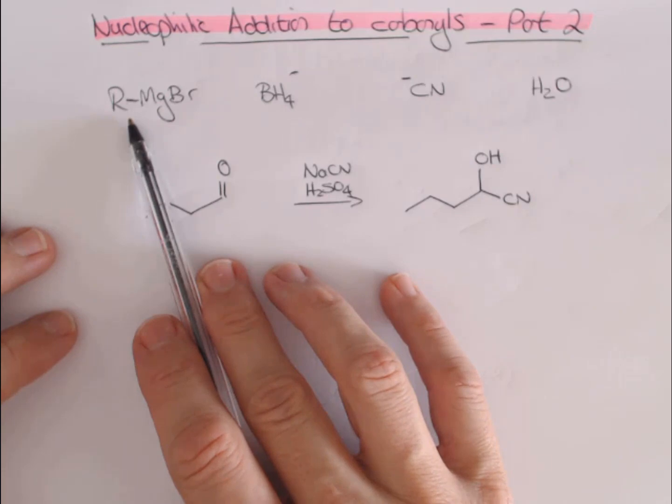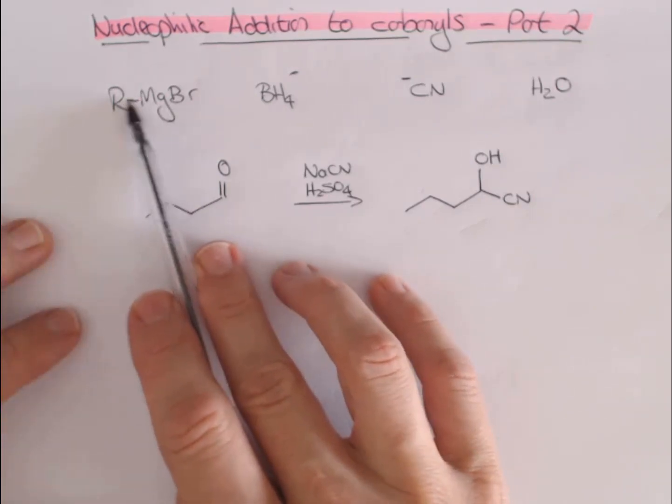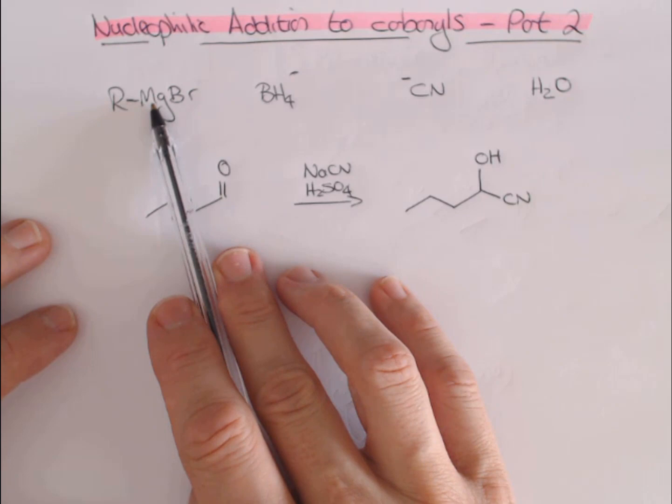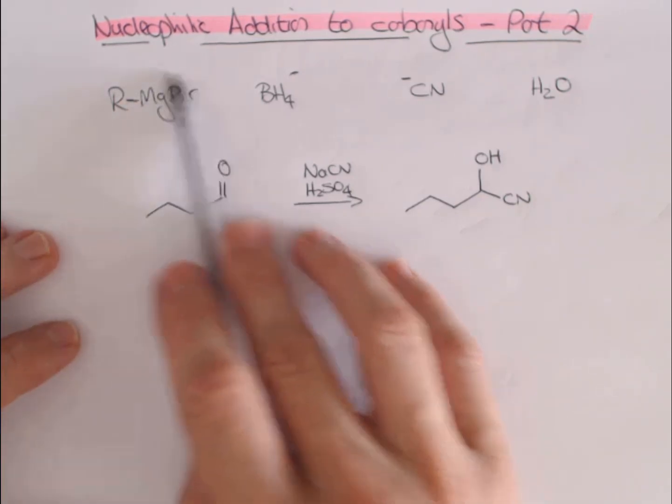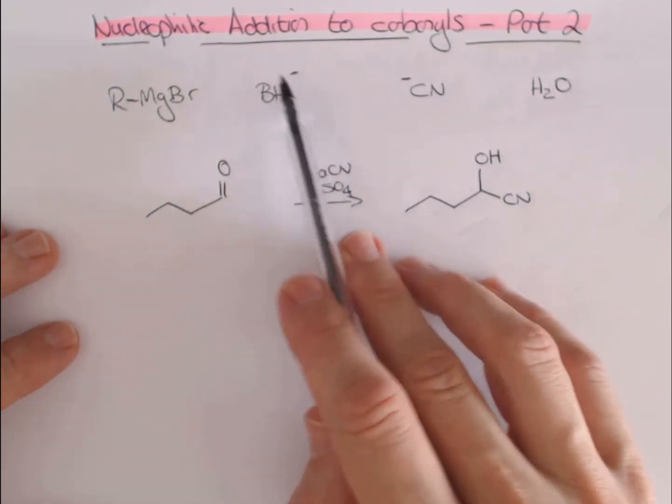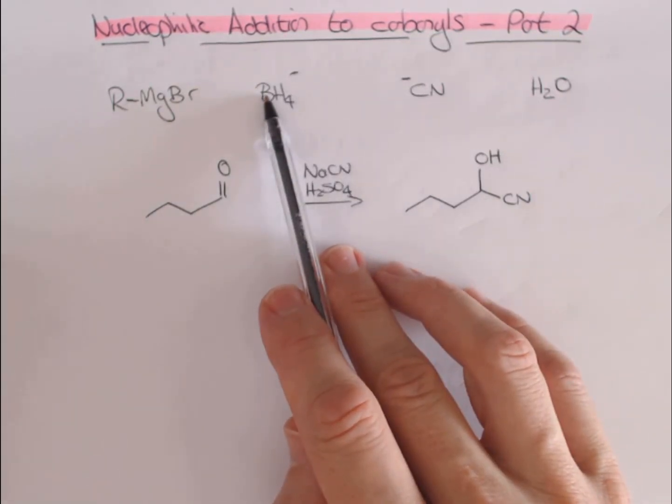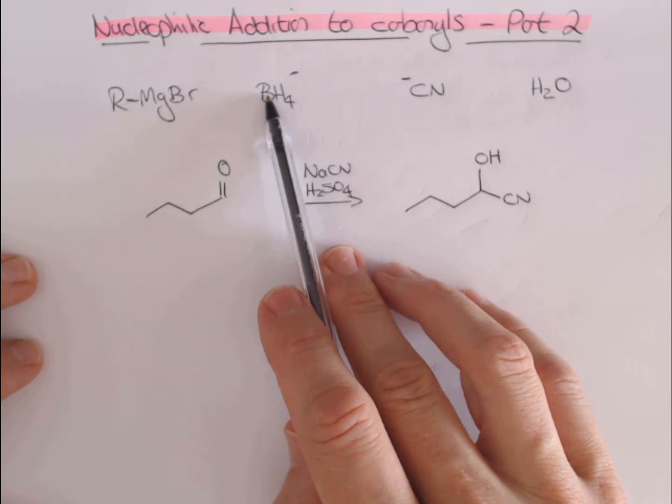In the first video we looked at two types of nucleophiles that were high-energy sigma bonds. The first was a Grignard reagent, which you've seen before. There's a high-energy sigma bond between the carbon and magnesium. It might have also been a lithium, so organometallics are really written. We'll expand more on that later in the course. We also looked at sodium borohydride, which has this high-energy sigma bond which can add to carbonyls.